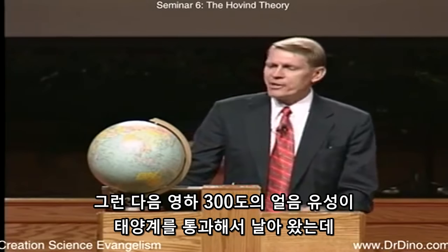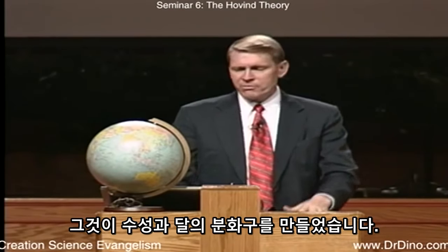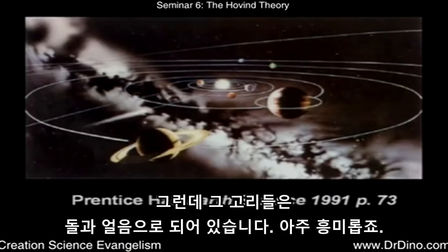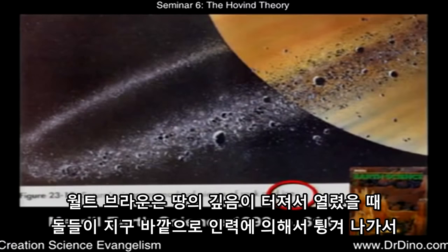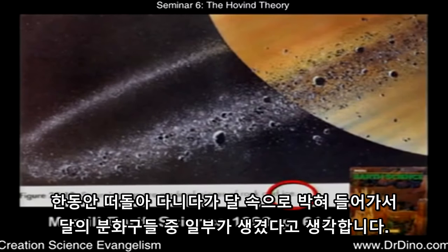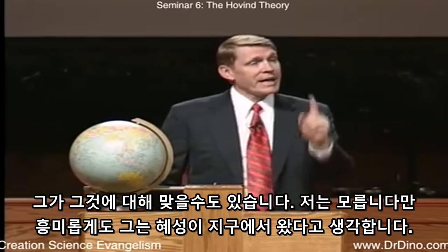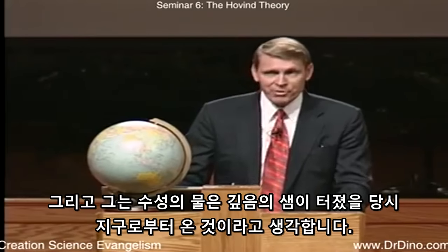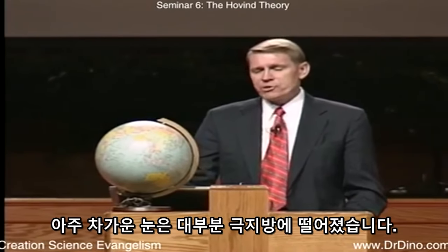Then this 300-degrees-below-zero ice meteor came flying through the solar system. Some of it broke apart — it made craters on Mercury, craters on the moon. Four of the planets today still have rings made of rock and ice. Walt Brown thinks some of the craters on the moon were formed when the fountains of the deep broke open and rocks went flying up out of Earth's gravitational pull, drifted around, and hit the moon. He thinks comets and water on Mars came from Earth when the fountains broke open. The super-cold snow would land mostly around the poles — super-cold ice is not only affected by the magnetic field, it's easily statically charged.